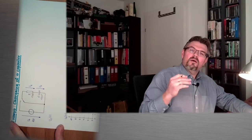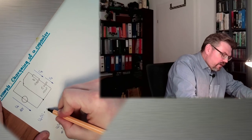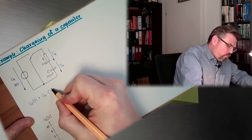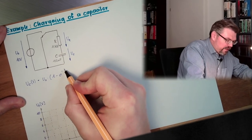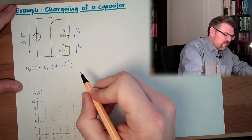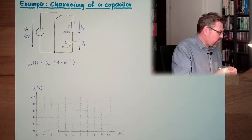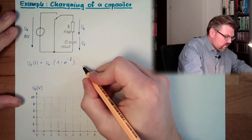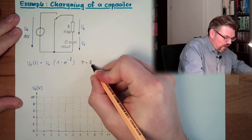Hello and welcome to a new video about the electric field. We are talking about a capacitor, and we talked about how a capacitor behaves when charging and de-charging. Today I want to make a little example to make it clearer. The voltage at a capacitor is u0 multiplied by 1 minus e raised to the power of minus t over tau, and tau is the time constant, where tau equals R times C.